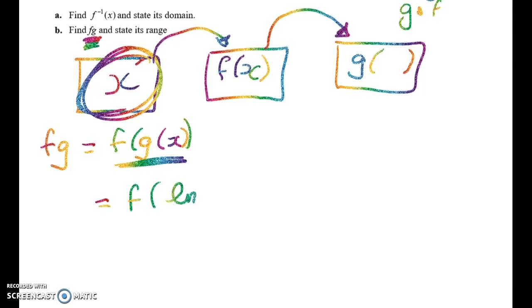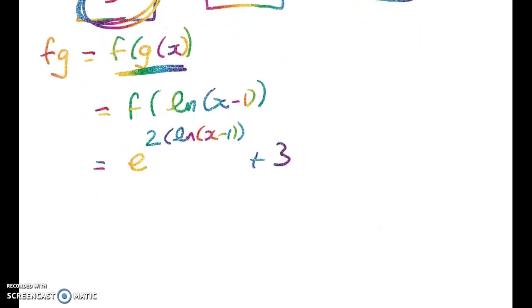So what's g(x)? Well, g(x) is the log of x minus 1. So we're going to take the log of x minus 1 and put it into my f rule, which is e to the 2 times whatever. Right.